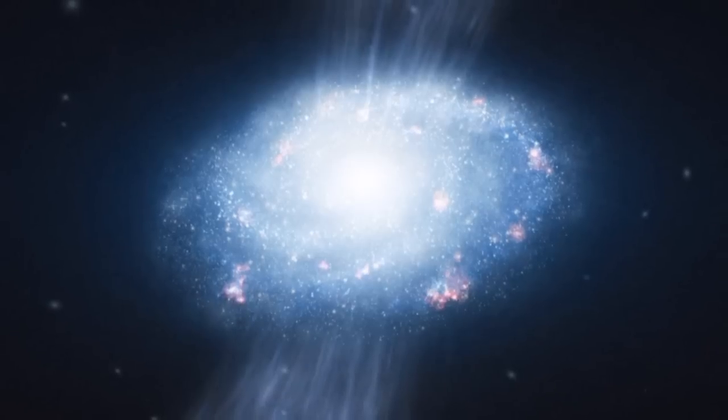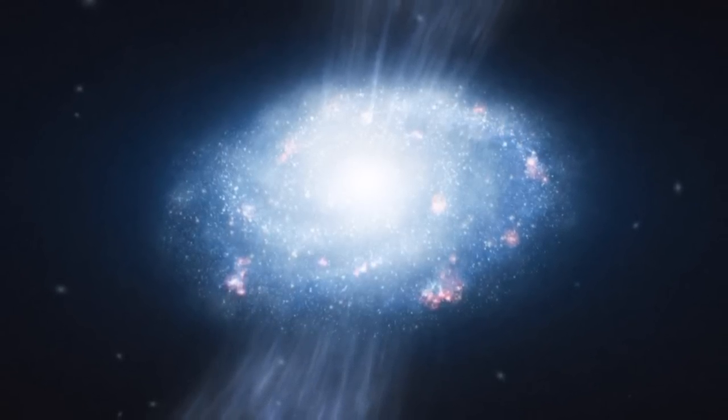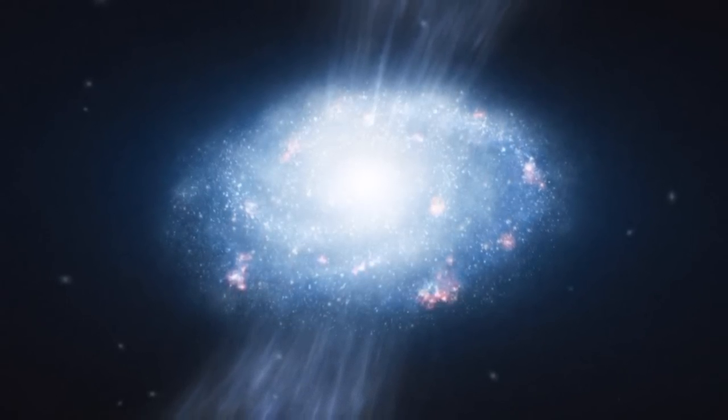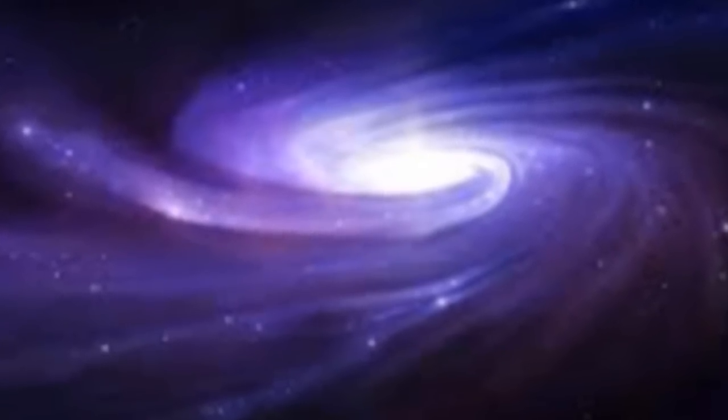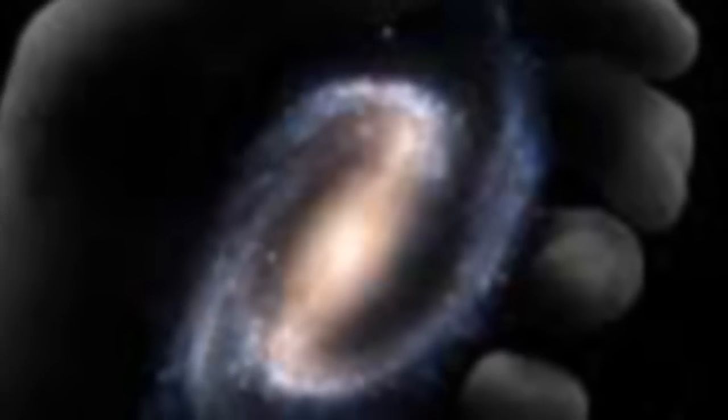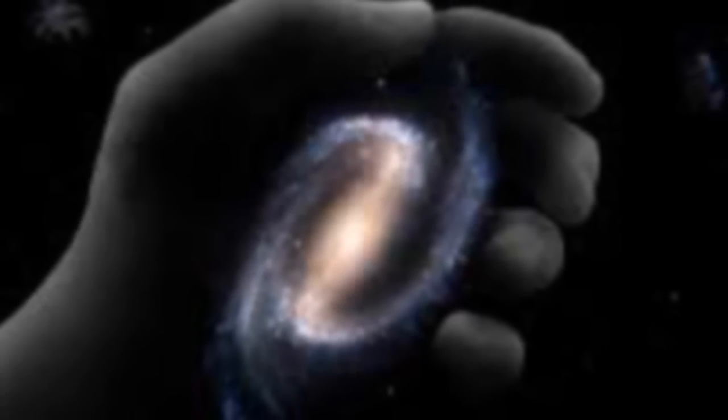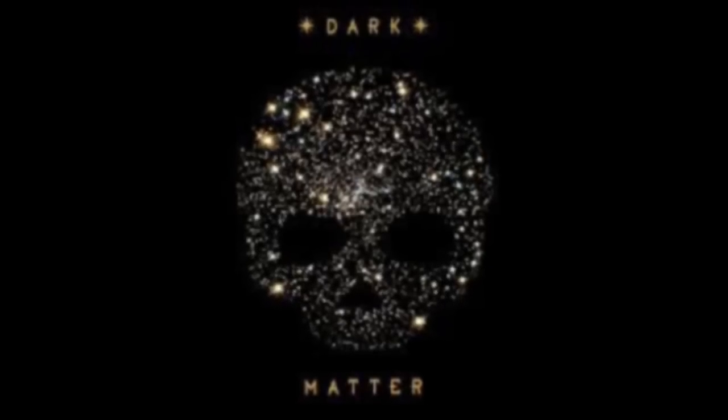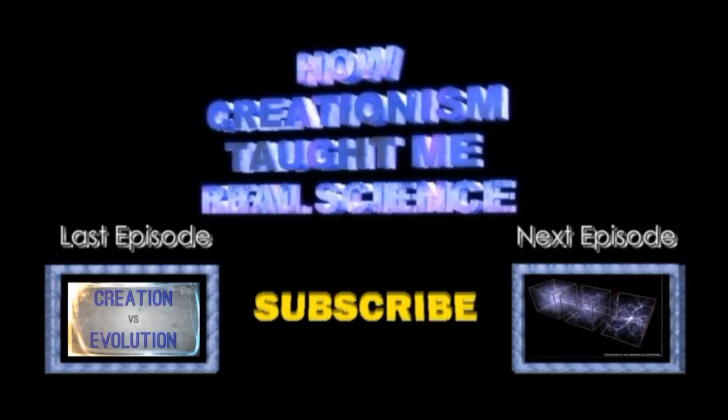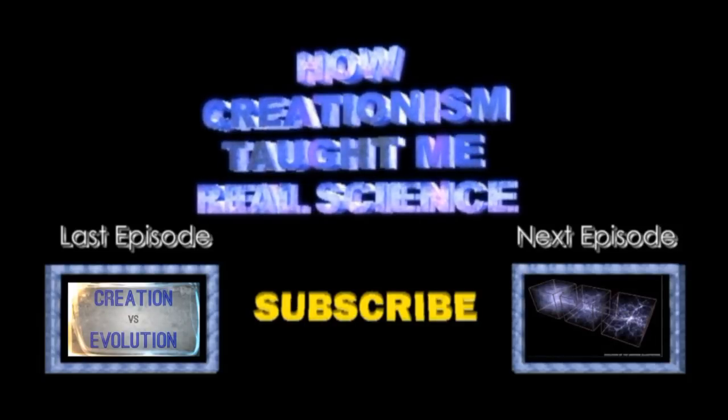So what we know is, there is in fact more mass in a galaxy than the stars, gas, and dust we see. Whatever this extra mass is, it originates from something that doesn't emit, reflect, nor absorb light. You can call it whatever you want, but it definitely isn't bright, so scientists call it dark matter until we can find out exactly what it is. And that's an example of how creationism taught me real science.